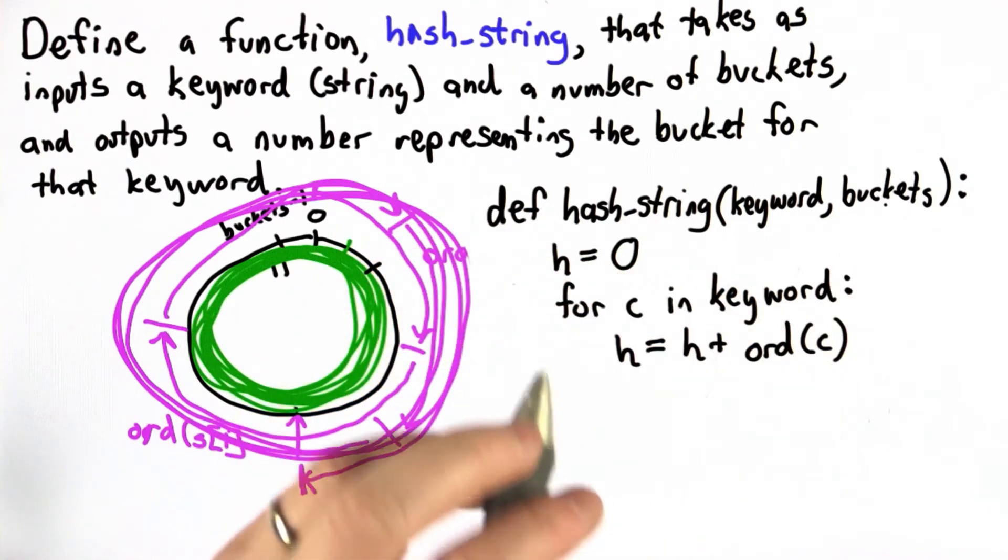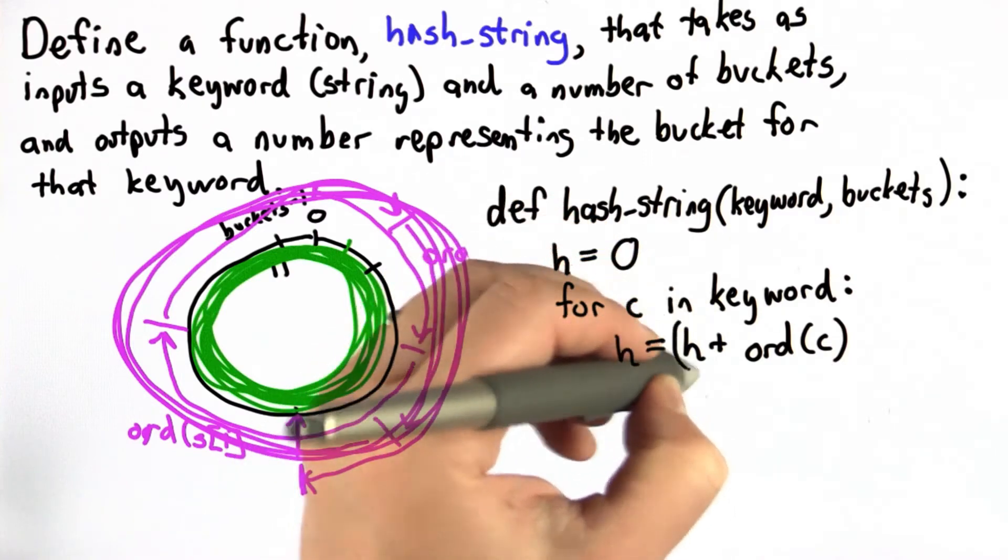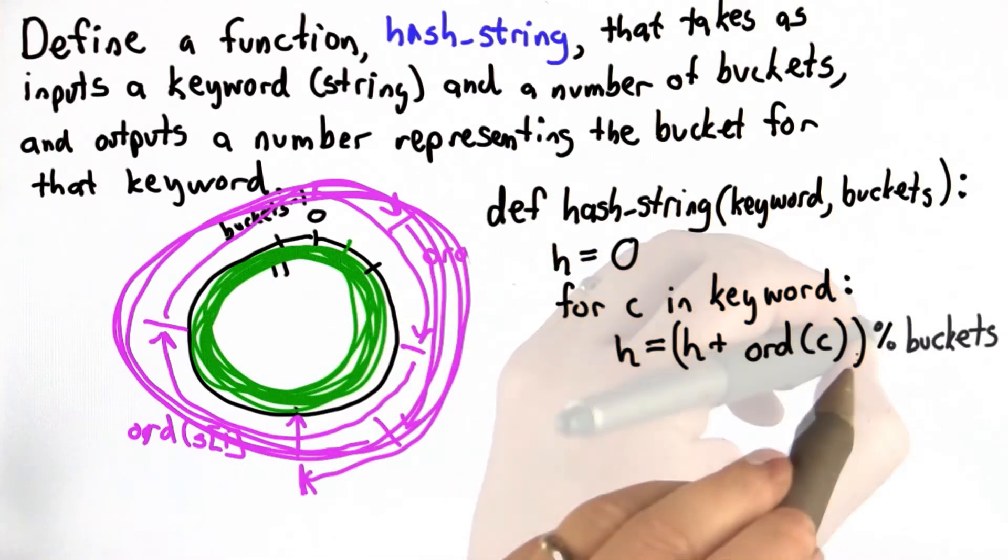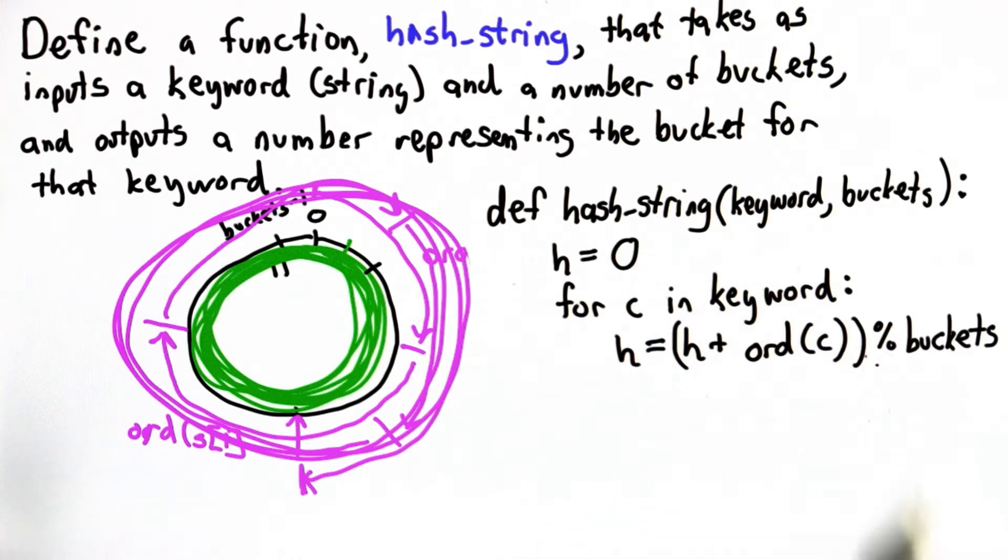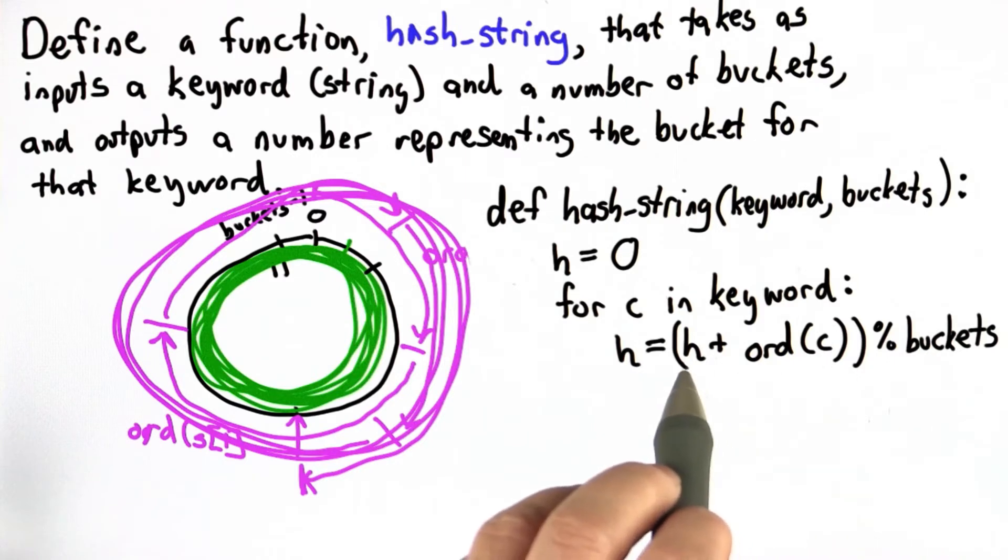We could do the modulo here. So we could, at this point, use modulo buckets. We have to be careful to have the parentheses here. If we just had the modulo buckets here, we wouldn't get the right result because it would do ord(c) modulo buckets. What we really need to do is modulo buckets the sum that we get from h and ord(c).